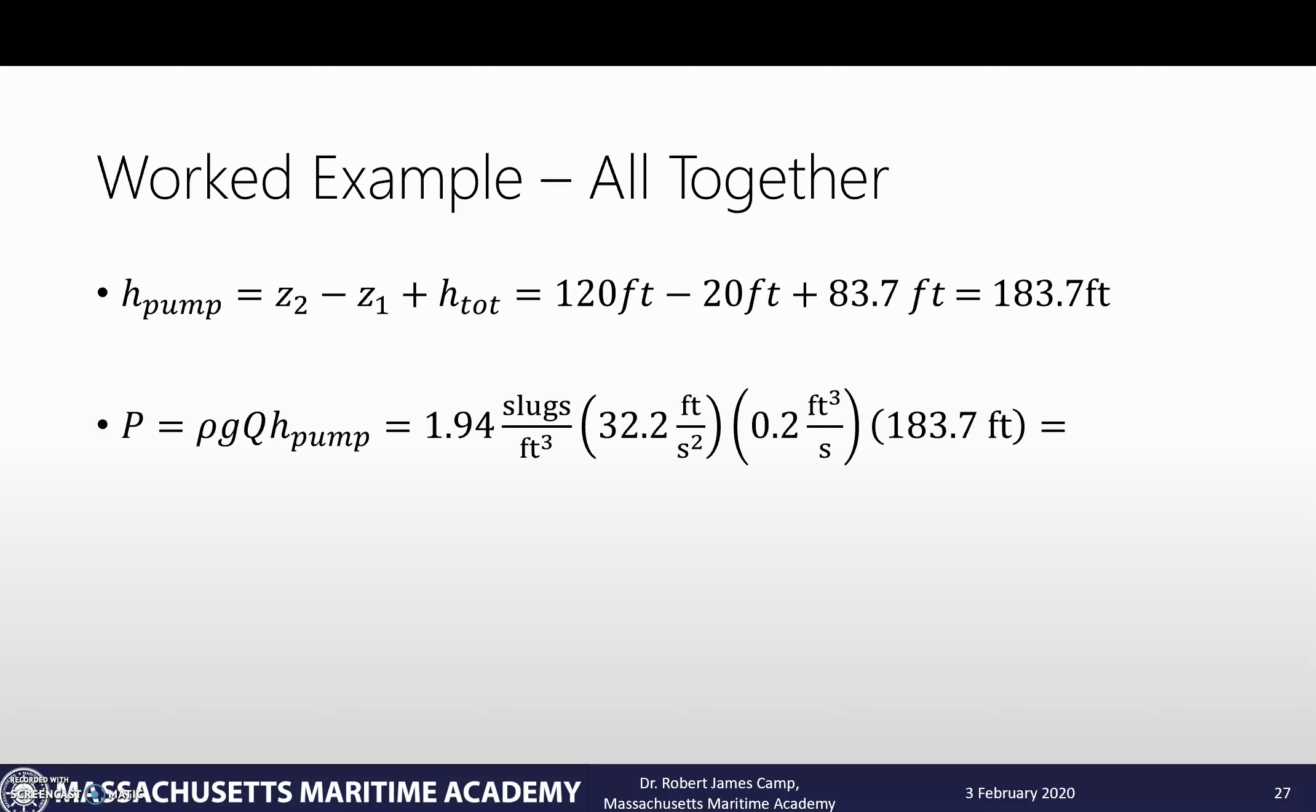ρ in our problem is 1.94 slugs per cubic foot, 32.2 feet per second squared, 0.02 cubic feet per second, times our 183.7 feet that the pump needs to supply to the system. That will come out to be 2300 foot-pounds per second. The problem asks for horsepower though, so we have to do a conversion. One horsepower is 550 foot-pounds per second, so once we make that last multiplication...